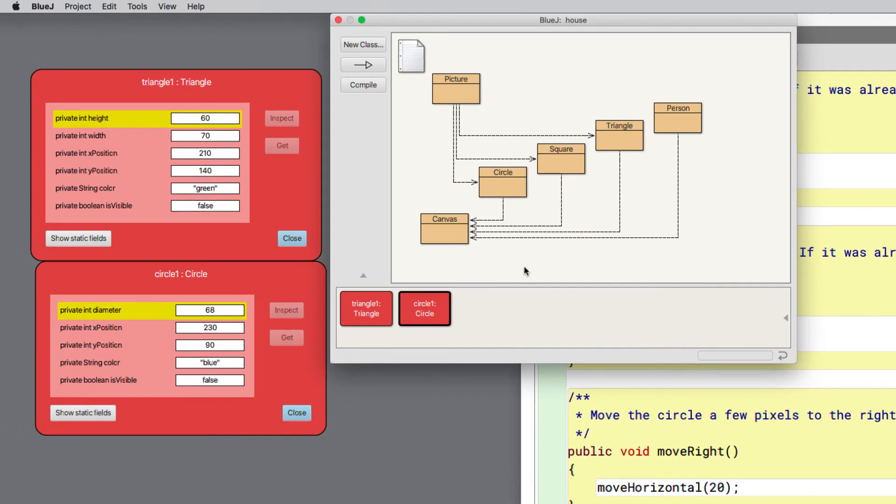And what you might like to do is create for yourself triangles, persons, bring up the inspectors for those, and then go and take a look at the source code of those classes just to confirm that you'll see exactly the same sort of pattern.